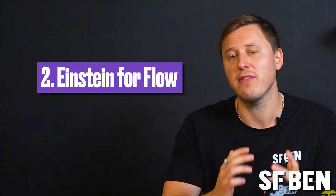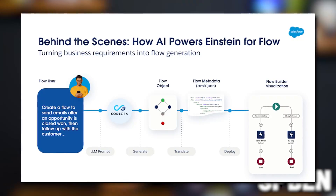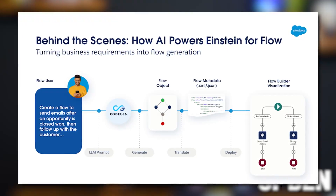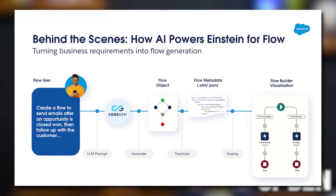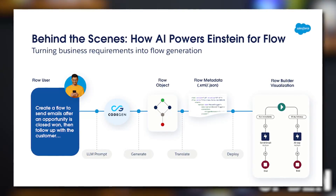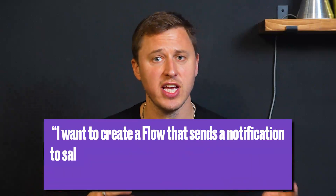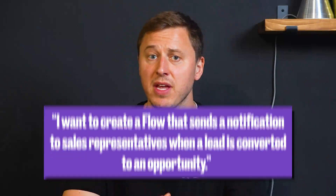At number two, we have Einstein for Flow — a generative AI tool that allows users to create workflows based on a text prompt. Simply describe your automation using natural language and Einstein for Flow will generate a draft flow for you. For example, you could type: "I want to create a flow that sends a notification to sales representatives when a lead is converted to an opportunity," and Einstein for Flow would generate the code for a workflow that does exactly that.